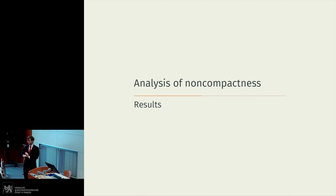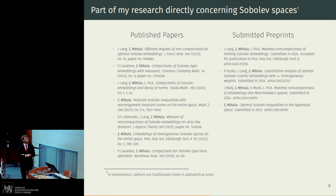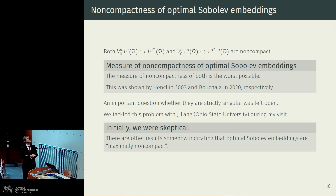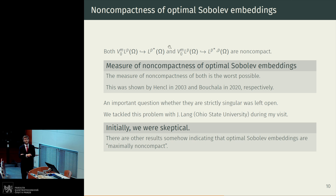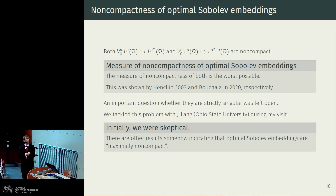This brings me to two actual results from my research. Both the optimal Sobolev-Lebesgue and the optimal Sobolev-Lorentz embeddings are well known to be non-compact. Their measures of non-compactness are also well known: it was shown by Edmunds and Lang that the measure of non-compactness of the optimal Sobolev-Lebesgue embedding is the worst possible, coinciding with its norm. Later it was shown by Bouchala that the optimal Sobolev-Lorentz embedding also has the worst possible measure of non-compactness. However, their results left completely open the question whether one of these Sobolev embeddings has better properties from the point of view of operator theory, for example, whether one of them is strictly singular.